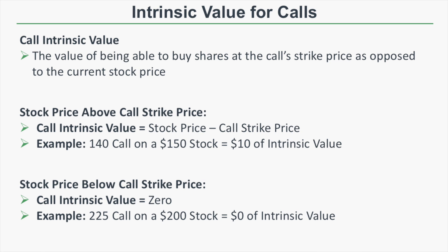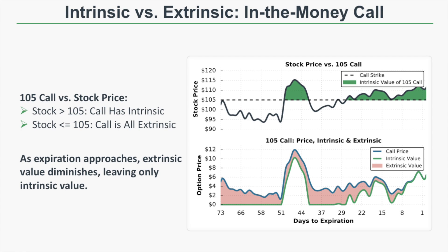To recap: a call's intrinsic value represents the value of being able to buy shares at the call strike price versus the current stock price. When the stock price is above the call strike price, intrinsic value equals stock price minus call strike price. For example, a $140 call on a $150 stock has $10 of intrinsic value ($150 - $140 = $10). When the stock price is below the call strike price, the call's intrinsic value is zero — any remaining value is extrinsic.